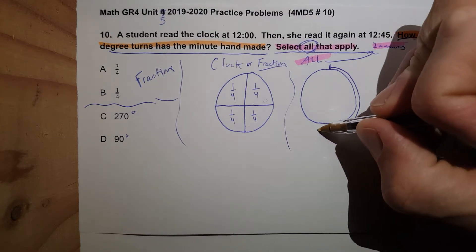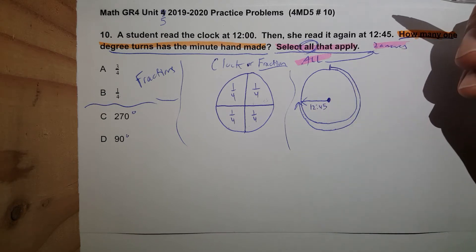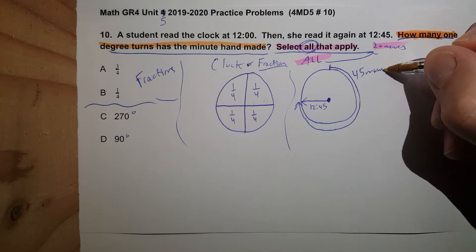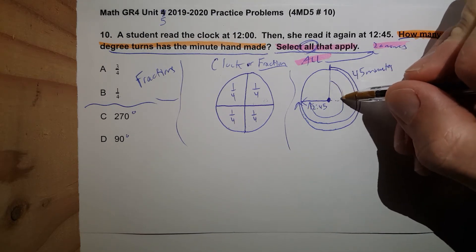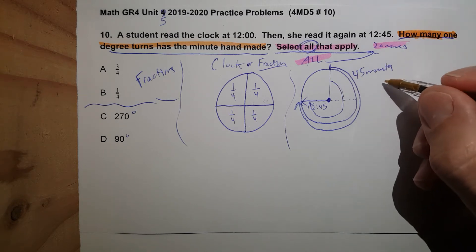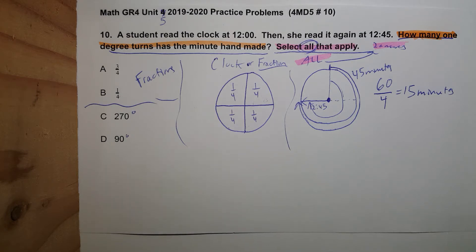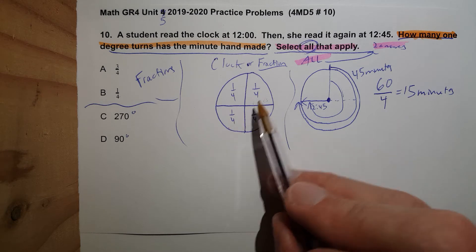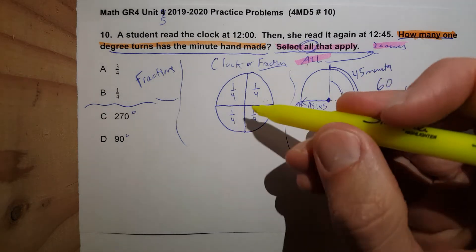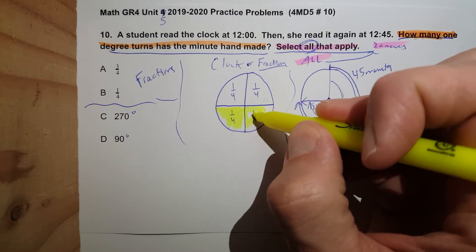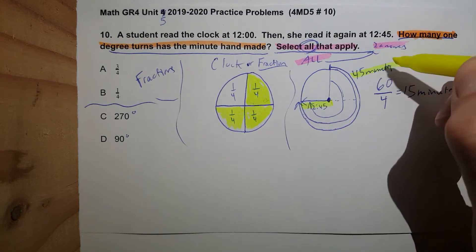All the way to 12:45, okay, 45 minutes. Remember it goes like this. Every 15 minutes is a quarter because 60 divided by 4 equals 15 minutes. Look how that just works precisely to this setup. That is beautiful. Do you think that was by coincidence? Of course not. So check this out: one fourth, one fourth. Well there's one fourth, here's one fourth, here's another one fourth. This is all the same as 45 minutes.